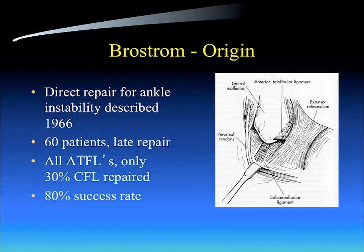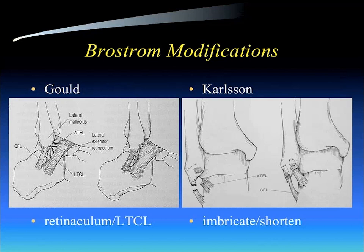The original Brostrum procedure described in 1966 typically only repaired the anterior talofibular ligament. You took that dense scar tissue from prior injury and imbricated it on the anterior aspect of the fibula. Only 30% of Brostrum's original series directed attention to the calcaneofibular ligament. In his early studies, he had an 80% success rate, which is not very good. Nathaniel Gould added his modification — identification and advancement of the extensor retinaculum to the fibula. Then Carlson described imbricating and shortening the calcaneofibular ligament in every procedure.